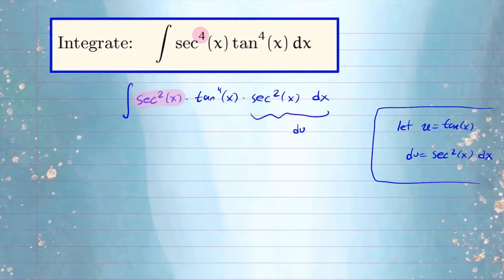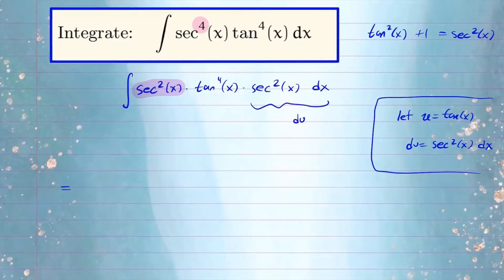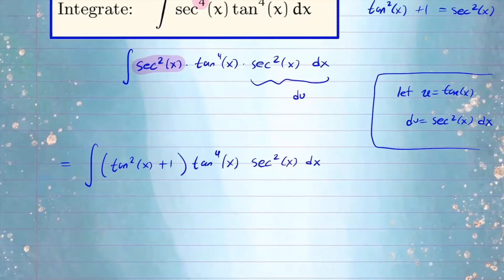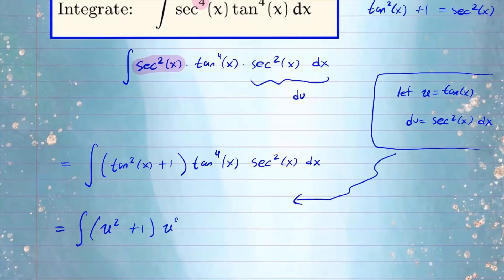We're going to rewrite the integral in terms of tangent, so tangent can be replaced with u. I only need to replace the remaining secant squared term. Recalling the identity: tangent squared of x plus one equals secant squared of x, we replace secant squared with tangent squared plus one. So we have the integral of (tangent squared of x plus one) times tangent to the fourth — already in terms of tangent — times secant squared x dx, which is du. Since u is tangent and du is secant squared dx, the integral becomes the integral of (u squared plus one) times u to the fourth du.